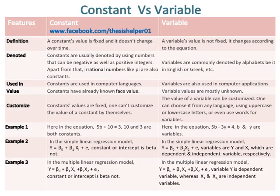Constants are usually denoted by using numbers that can be negative as well as positive integers. Apart from that, irrational numbers like pi are also constants. Whereas variables are commonly denoted by alphabets, be it in English or Greek, etc.